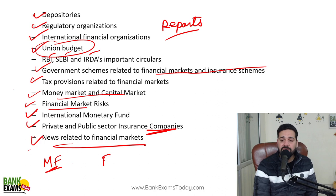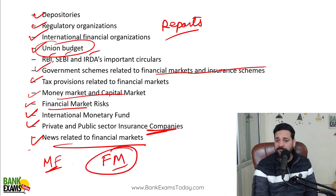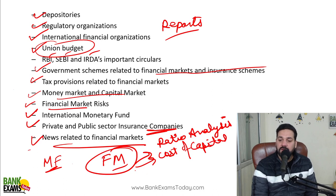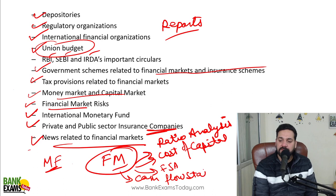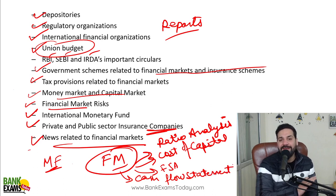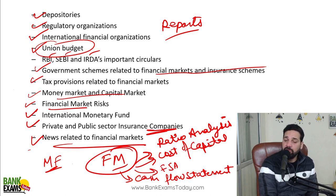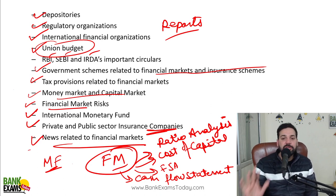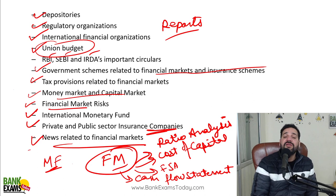Plus jo topic yaha pe mentioned nahi hai woh hai financial management. FM mein topics hain jaise ratio analysis - paper mein aaya hua hai - cost of capital, financial statement analysis, cash flow statement, fund flow statement. Yeh bahut hi important topic hai, pichle saalon mein exams mein aaye hain. Ye questions relatively easy aate hain - aapki sirf itni knowledge check ki jaati hai ki aapko pata hai. Koi depth mein question nahi puche jaate jaise quant ya reasoning mein, so kaafi easy questions yahan pe aate hain.